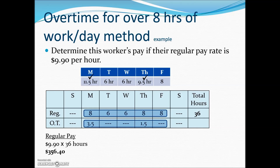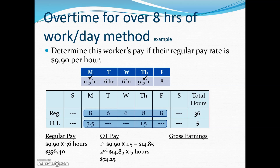Then we go back to the ledger and add up the number of hours of overtime, which is 5 hours, and calculate the overtime pay. We need to find the overtime pay rate, so we take the straight wages times time and a half — that is, times 1.5. Every hour of overtime receives a $14.85 rate, times the number of overtime hours, 5, gives us the overtime pay. For the gross earnings for this worker for the week, we add those two together.